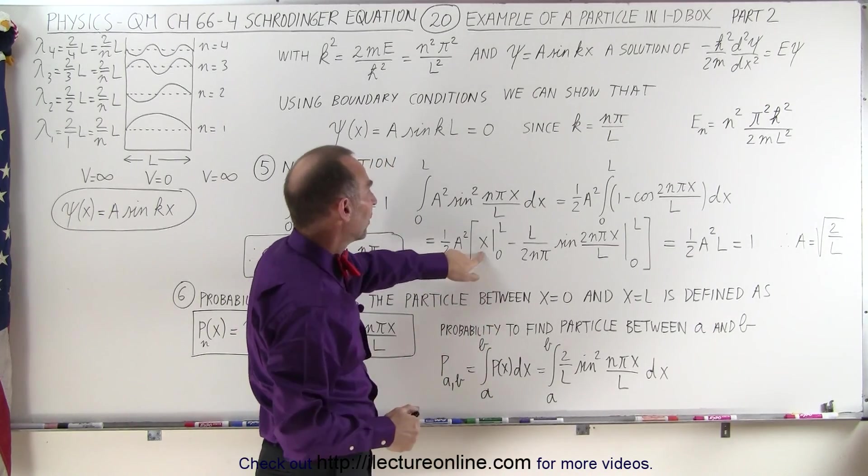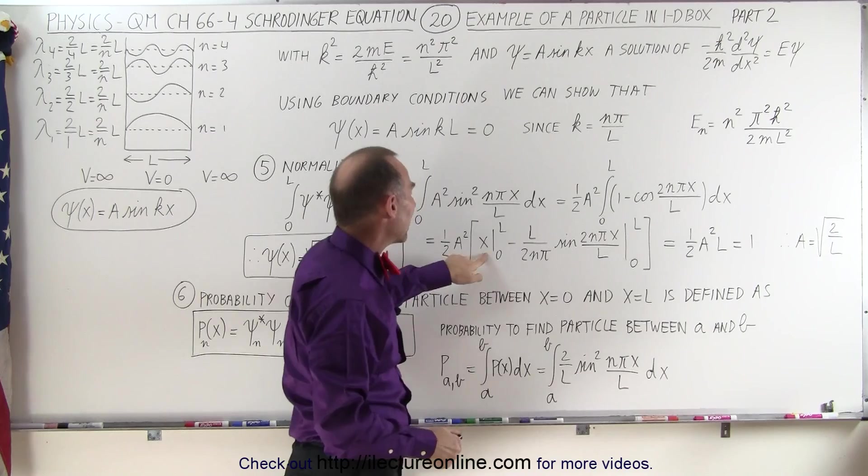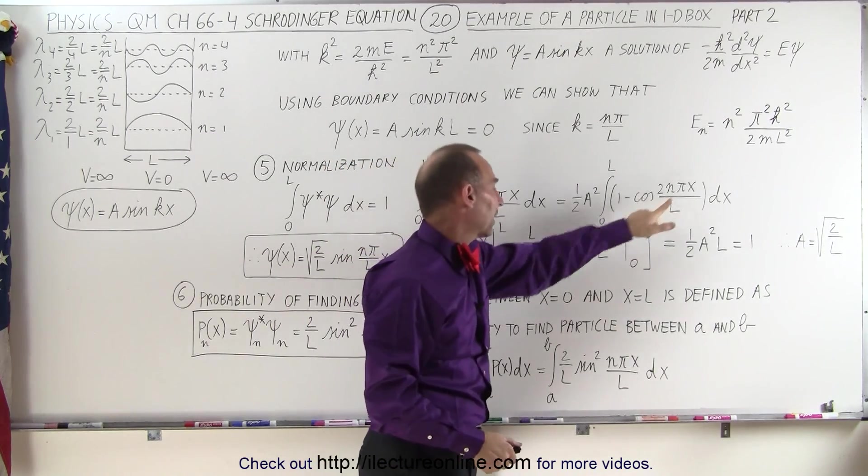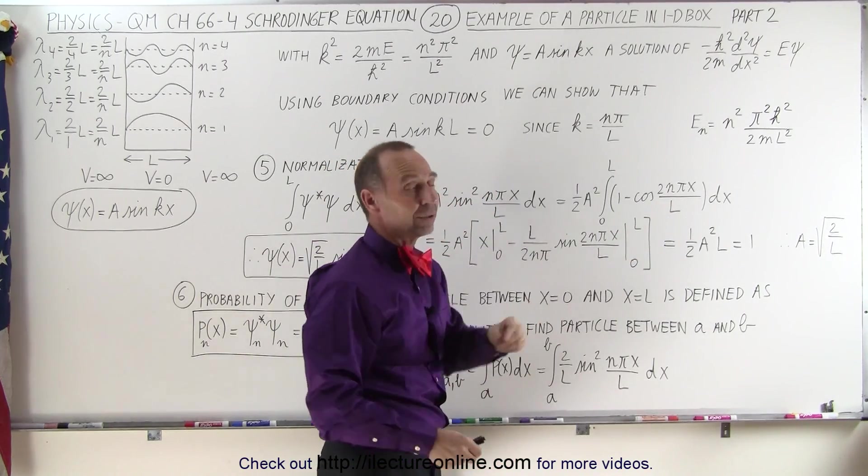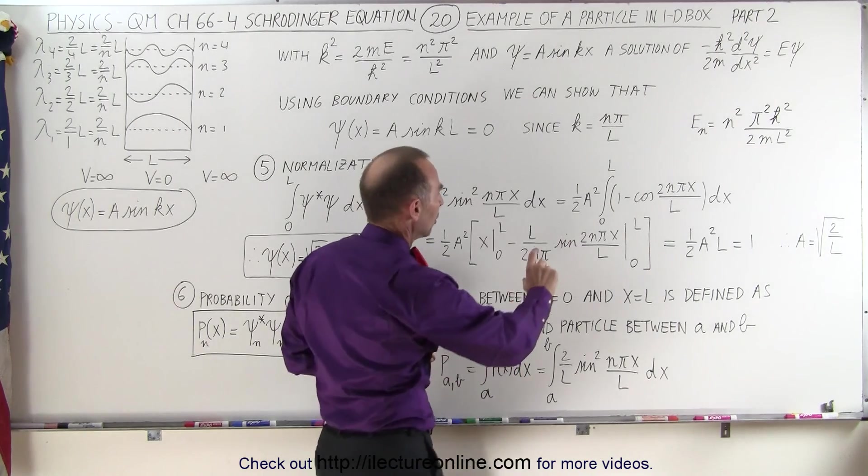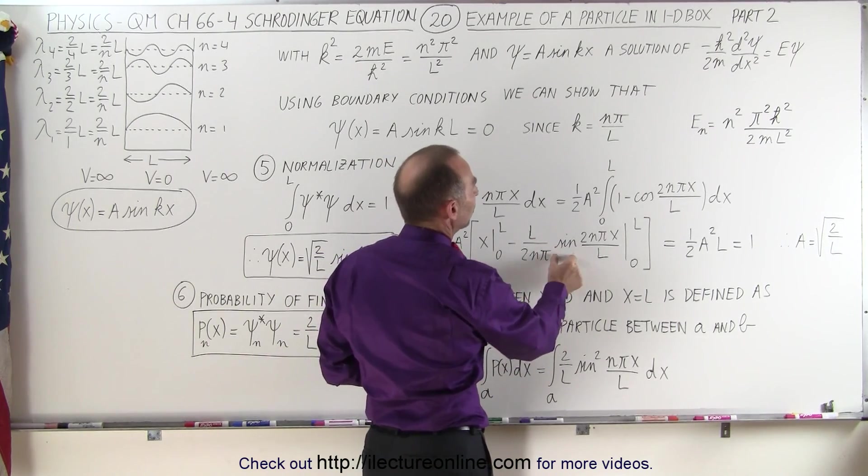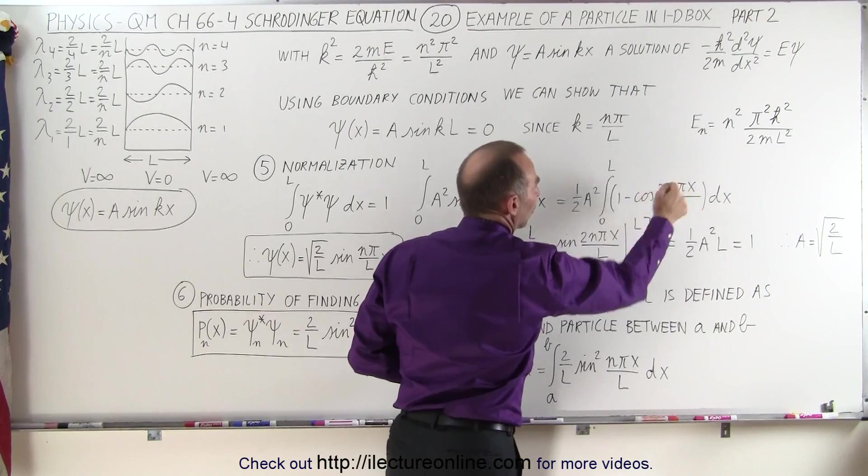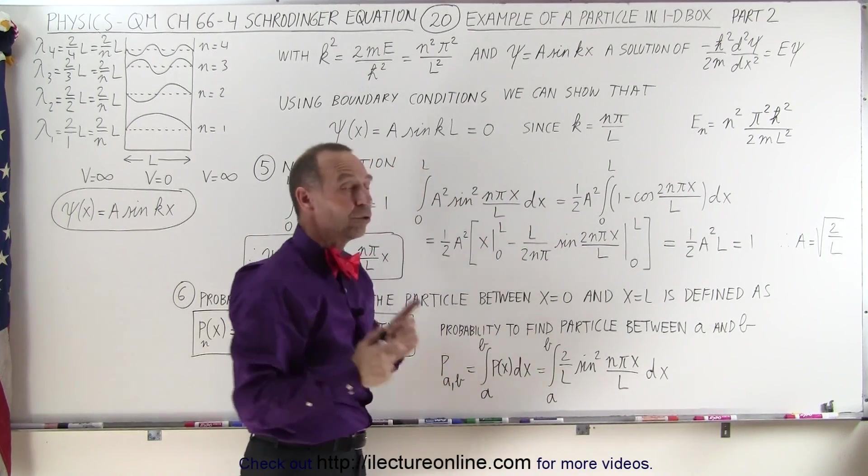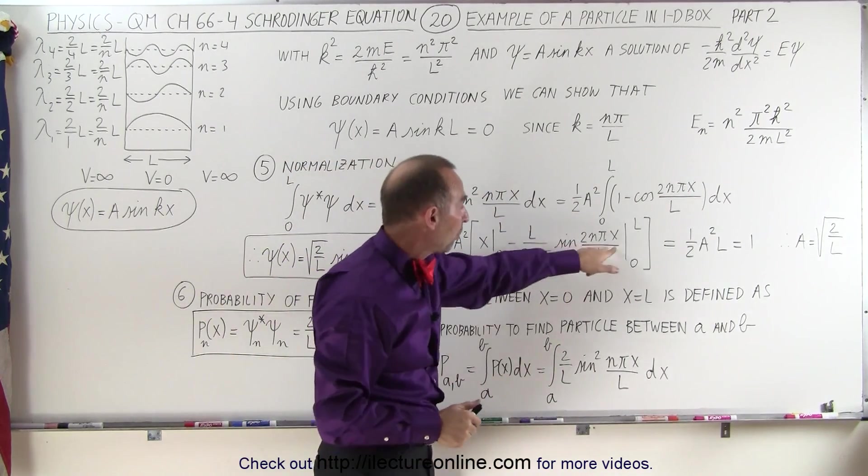So when we integrate that, the one integrates to be an x, and the cosine of that angle integrates to be the sine of the angle. Of course, we need the proper differential, we need l divided by 2n pi to cancel out the differential we need to integrate that angle. But notice here, when we integrate this portion, and we put in the limits from zero to l, in both cases we get zero, so this term simply disappears.